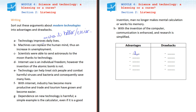Sentence B: 'Machines can replace the human mind, thus an increase in unemployment.' So what happens when machines replace persons doing certain jobs? It creates unemployment — in Arabic, al-bitala. So instead of creating jobs, it creates unemployment. So it's, of course, a drawback.